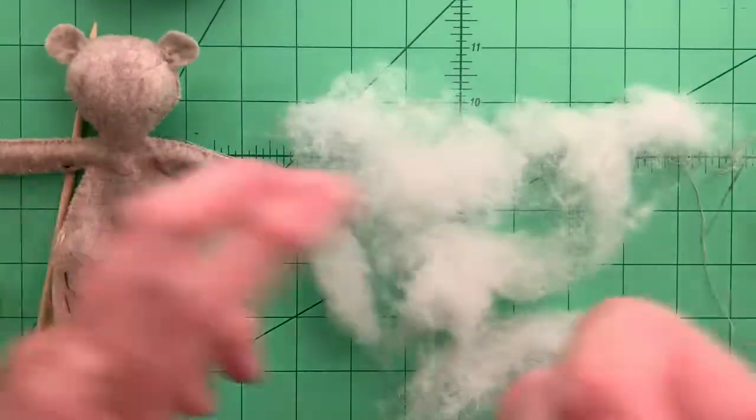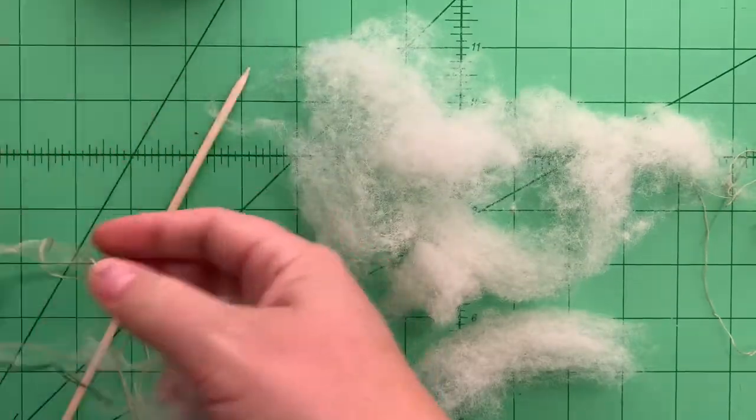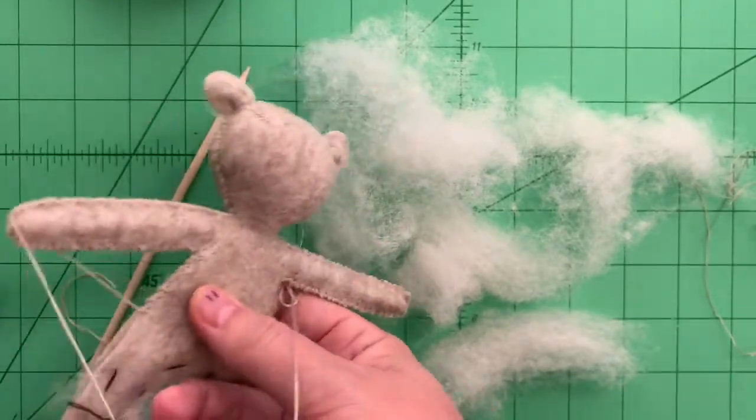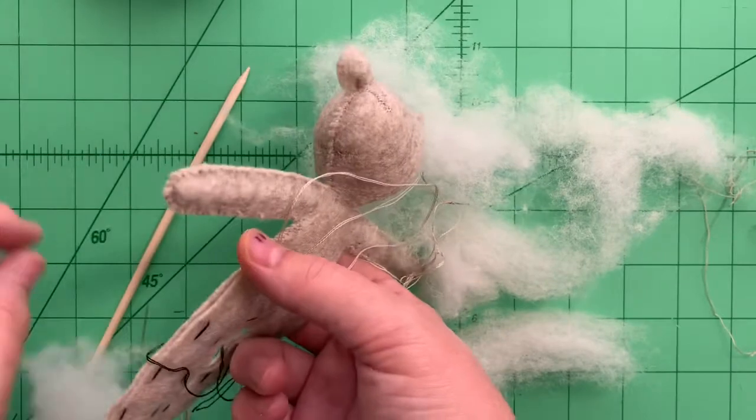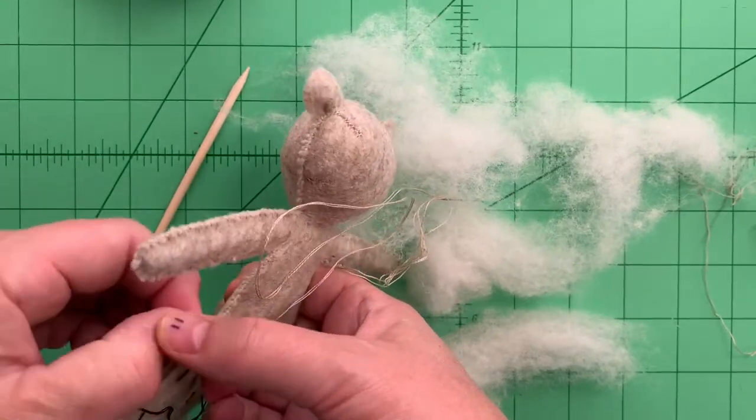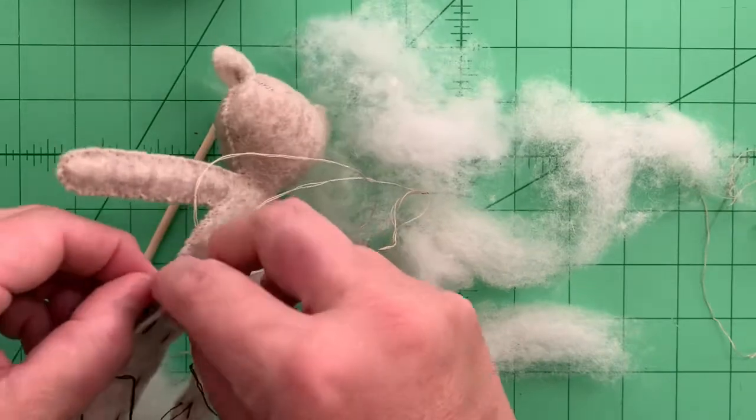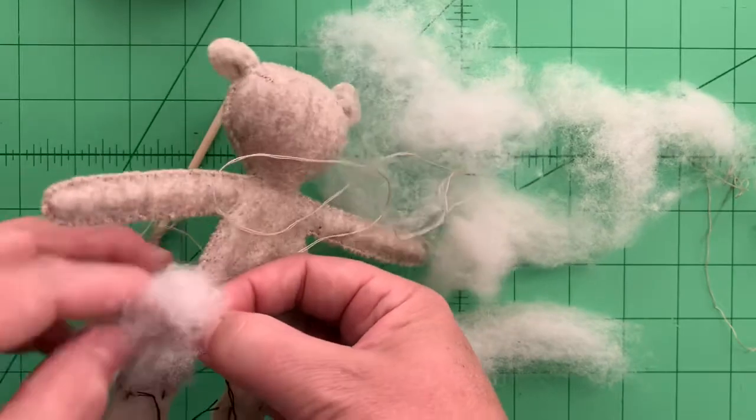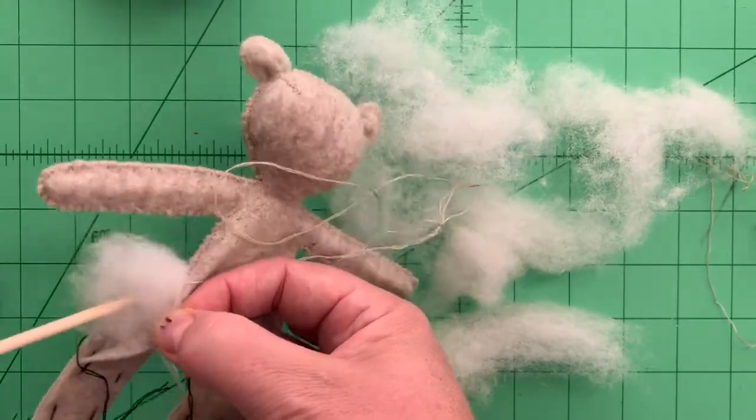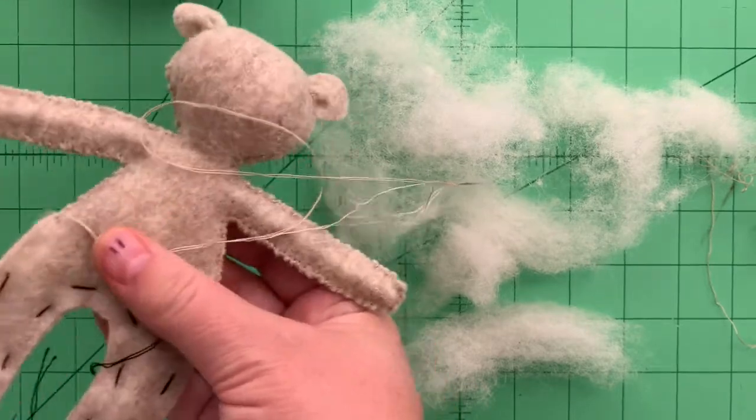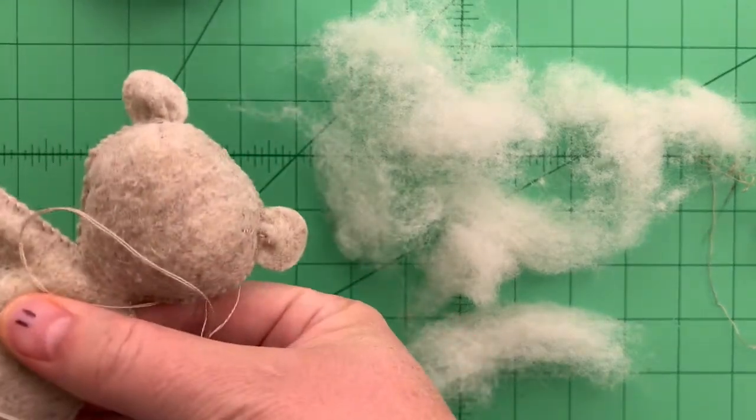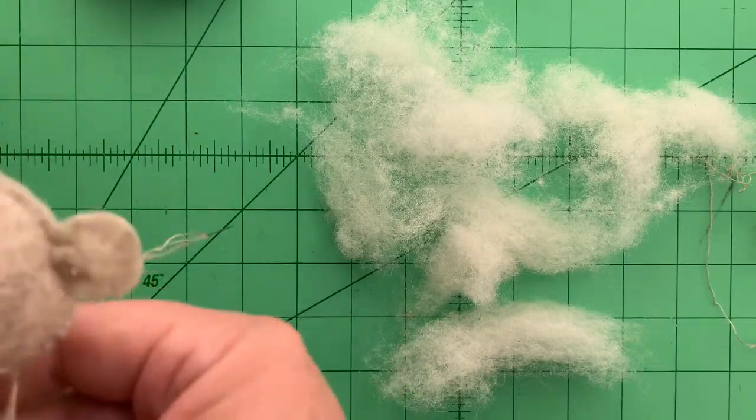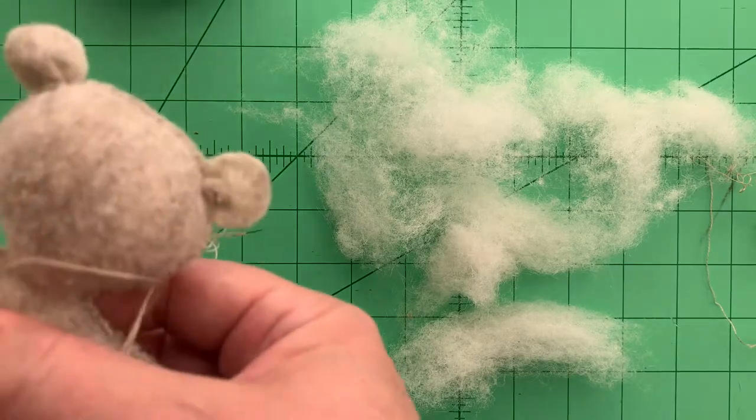We're going to open them up here and using the flat side of the skewer, the blunt end, we're going to shove that roving in there. You want to do little pieces because we're going to do the arms first and you don't want to have too much in there. Just push that in with the blunt end.